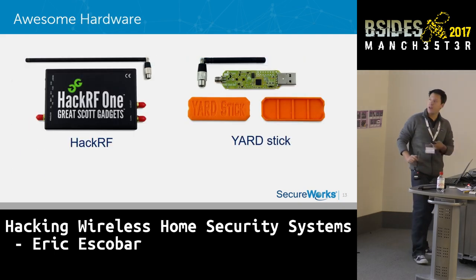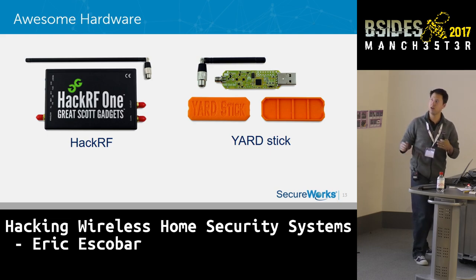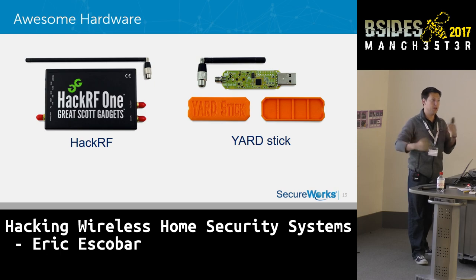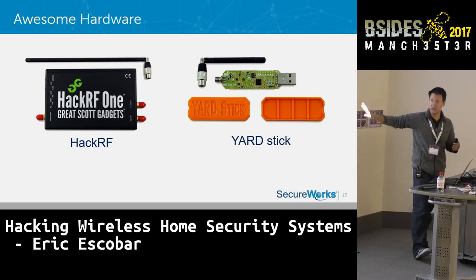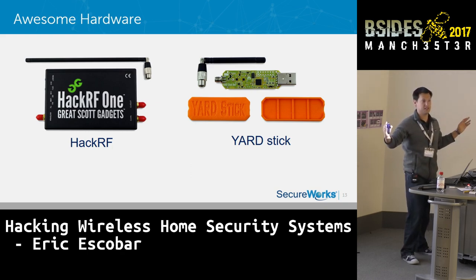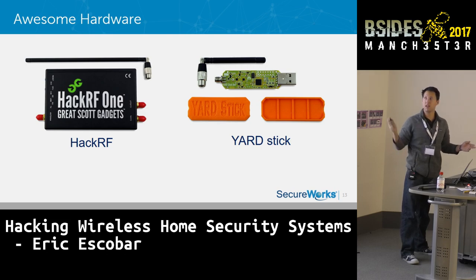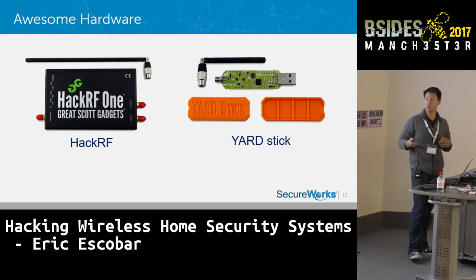The HackRF goes for around $300 and has a huge range of bandwidths. It's half duplex — like a walkie-talkie, you can either talk or listen, not both. Full duplex SDRs are multiple thousands of dollars, whereas the HackRF is a great entry level that can still perform most attacks. Michael Osmond has a free series at greatscottgadgets.com — it's the same two-day class offered at Black Hat for thousands of dollars, available online for free.